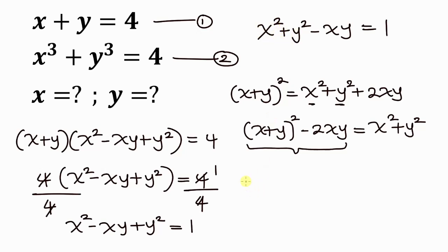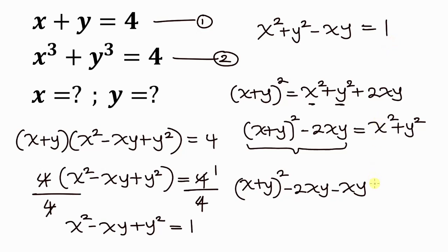So x squared plus y squared gets replaced with x plus y all squared minus 2xy, and then we still have minus xy. So we have x plus y all squared minus 2xy minus xy equal to 1.